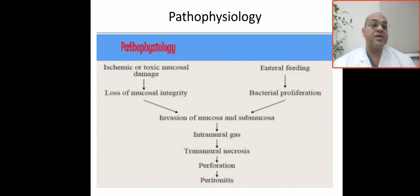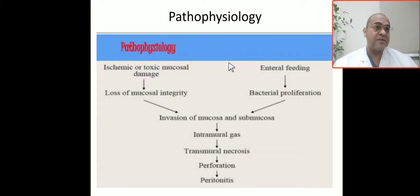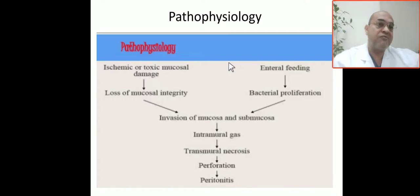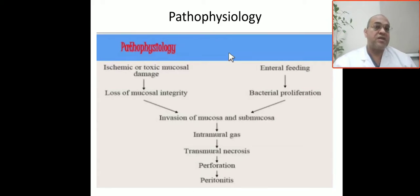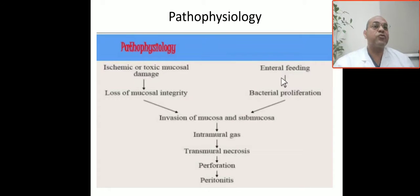What is the pathophysiology? We start with enteral feeding. Our patient was 28 weeks gestation, required little respiratory support, feeding was started on day three and advanced, and on day five abdominal distension appeared. So the first risk factor is prematurity and the second is enteral feeding. The problem with enteral feeding is bacterial proliferation.